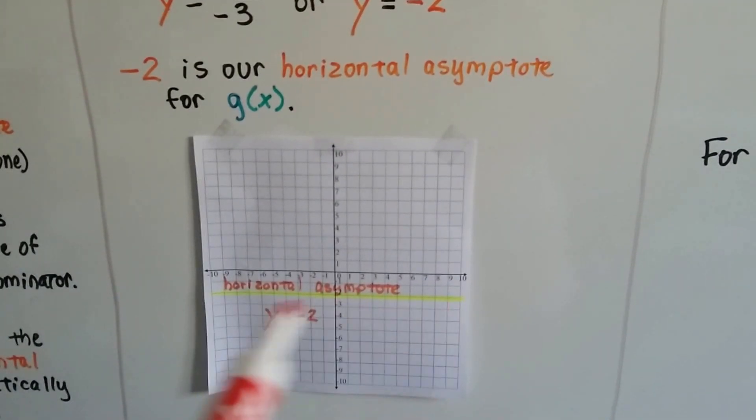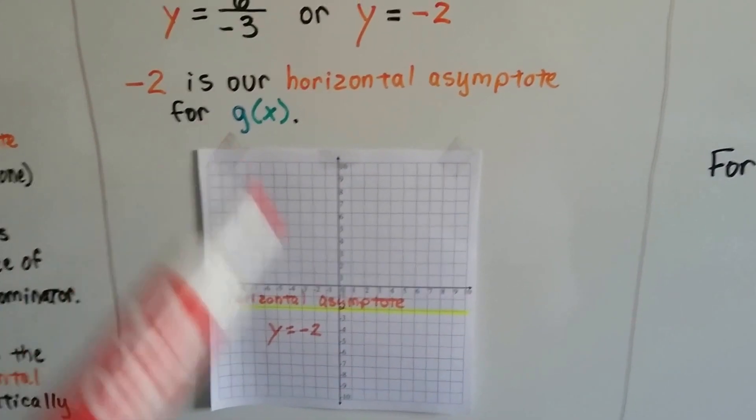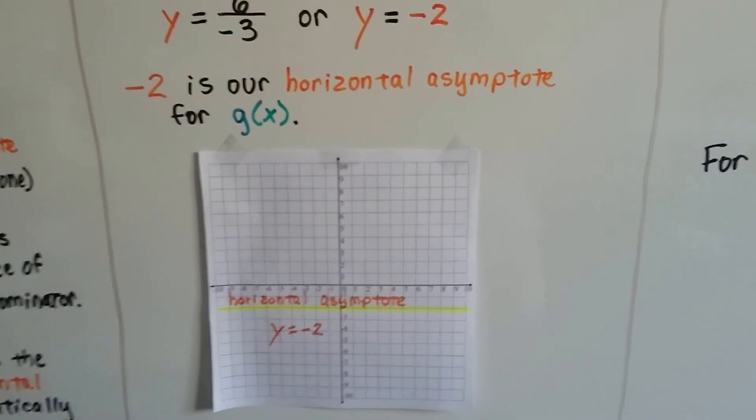There's our horizontal asymptote. See? You put the vertical one in and then you can draw your curve, right?